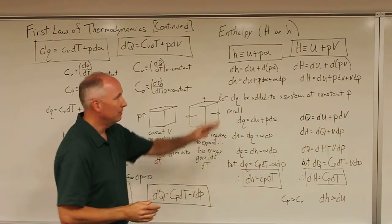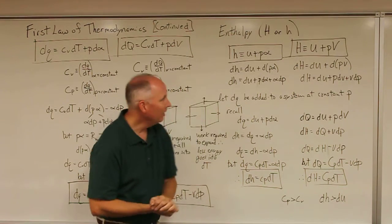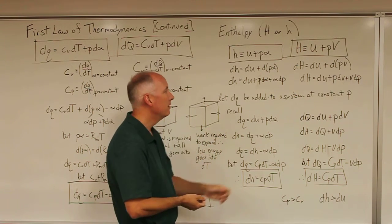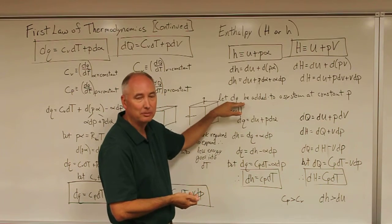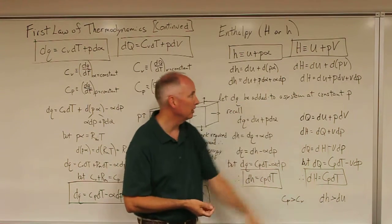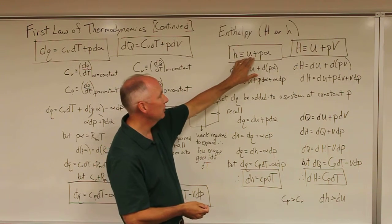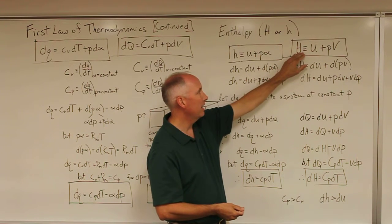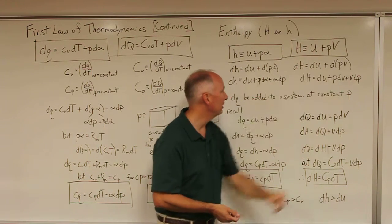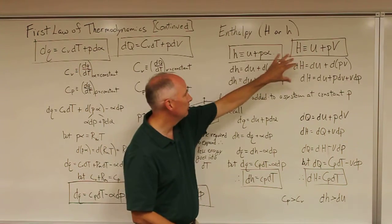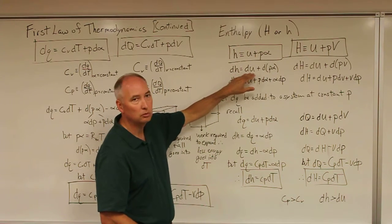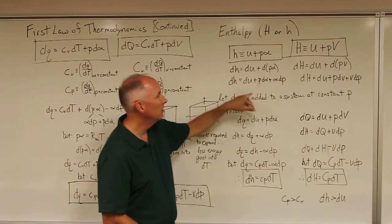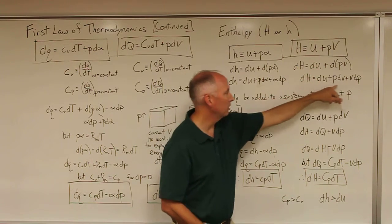Next, we introduce the concept of enthalpy. Enthalpy essentially defines the response of a system — specifically, the incremental amount of heat added to it at constant pressure. We define the intensive enthalpy as the internal energy plus p_alpha, and for the extensive form, capital H equals internal energy plus pV. Taking the differential of each gives dh equals the change in internal energy plus the differential of p_alpha, which expands into a specific expression. Similarly, the extensive form yields its corresponding expression.